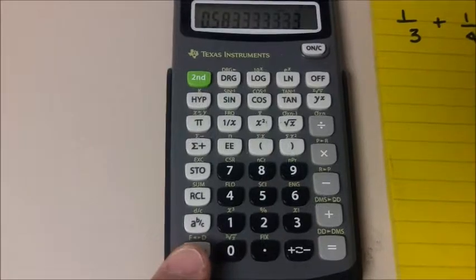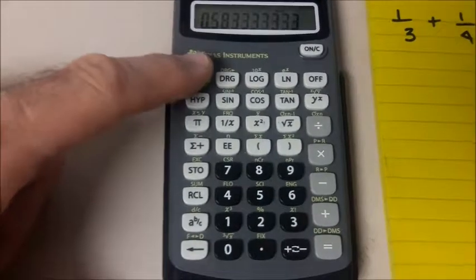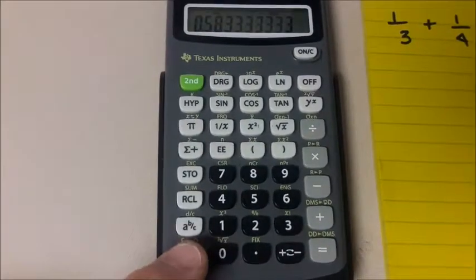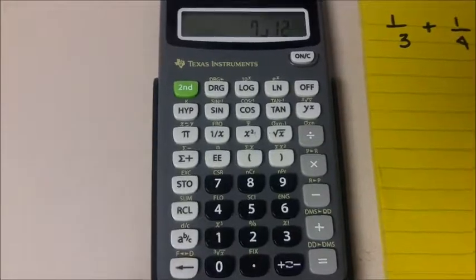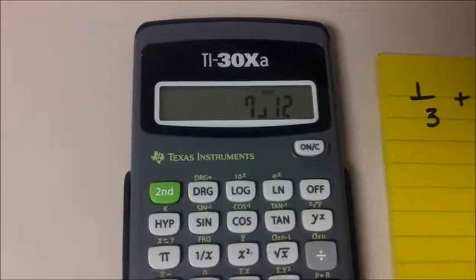On this one it is right here, it is f to d. So you would do 2nd, and there it is, 7 divided by 12.